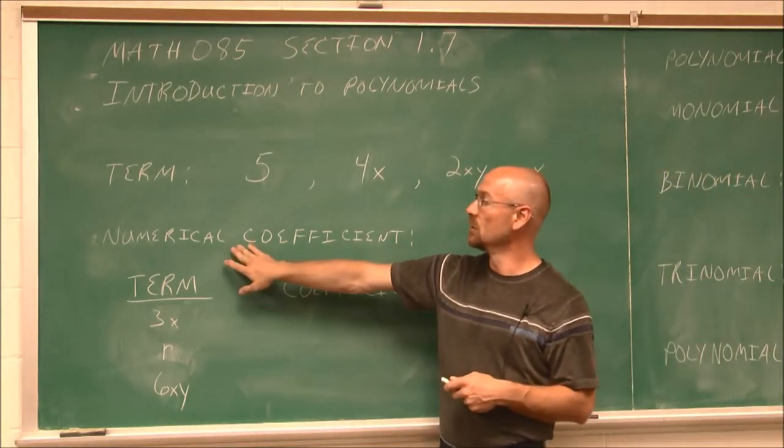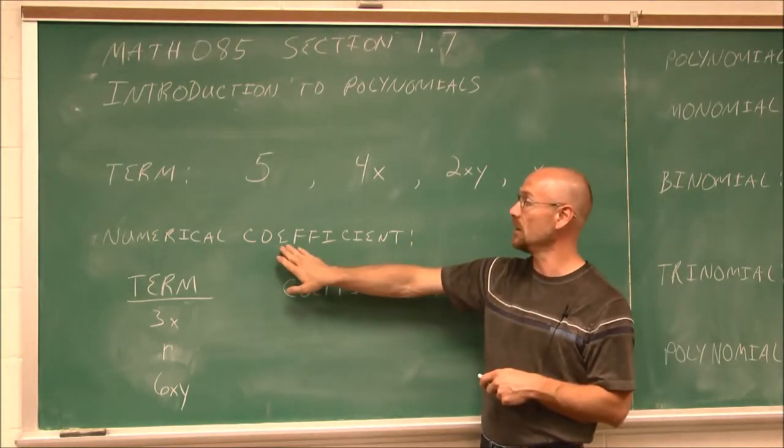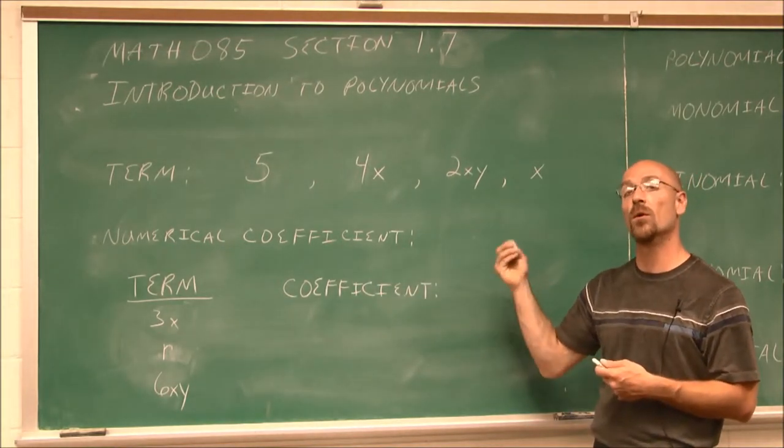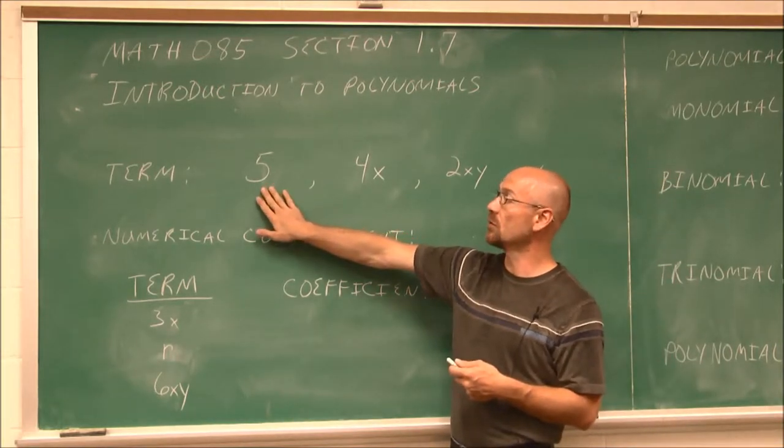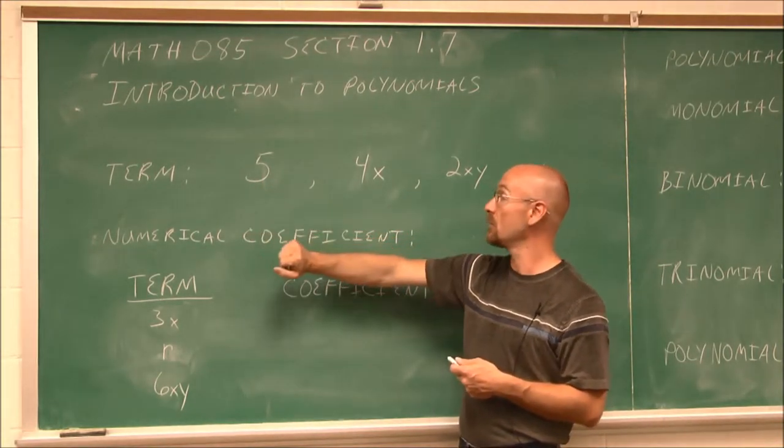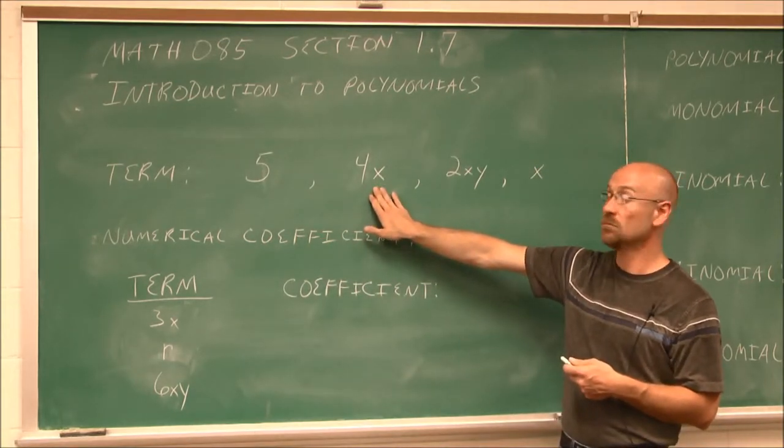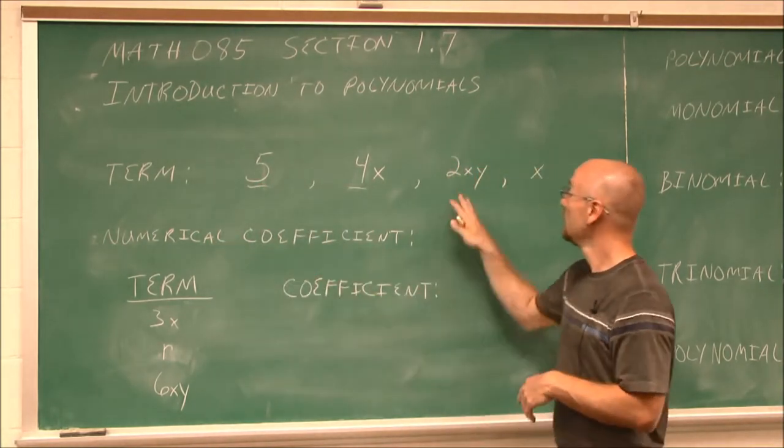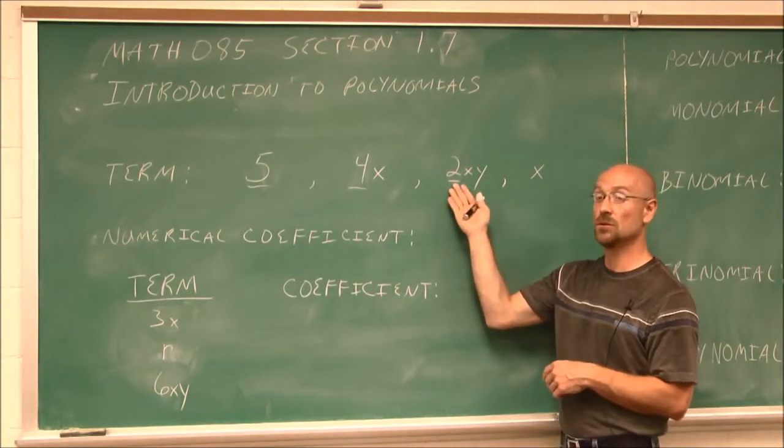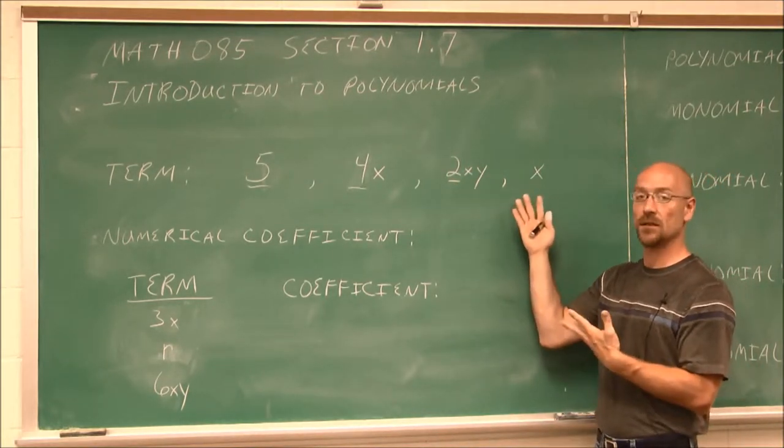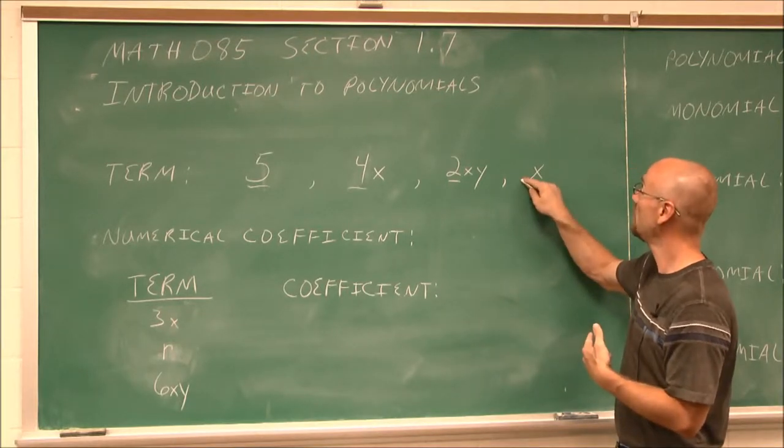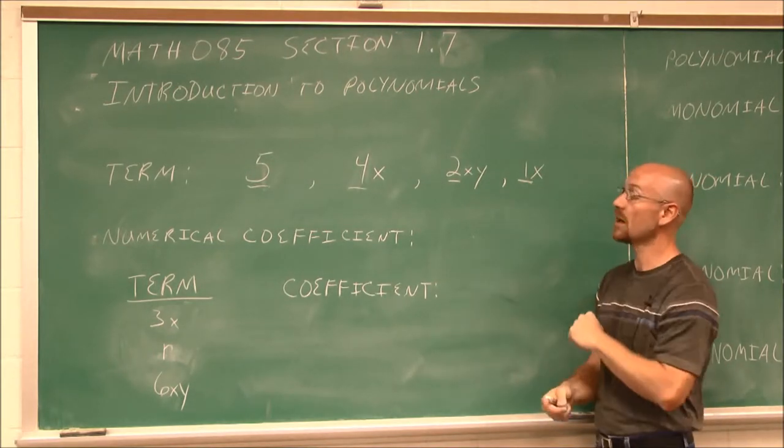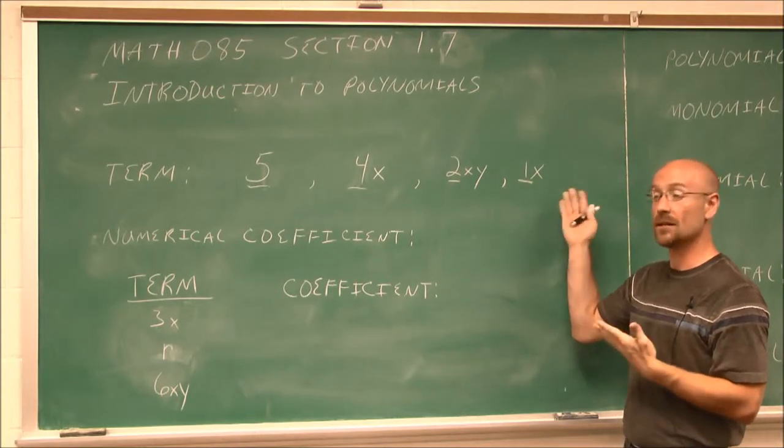So then we have to define numerical coefficients. The numerical coefficient is just the number that we actually see in front of the term or know that is there. As an example, the numerical coefficient for this particular term is 5. The numerical coefficient for this term is the 4. This term here, the numerical coefficient is 2. And this one here, well, we don't see a number written out front. But we have to assume that it's 1. I recommend not writing that 1 in there. I just do that for the point of illustrating. There is a 1 there, even though it's not written.